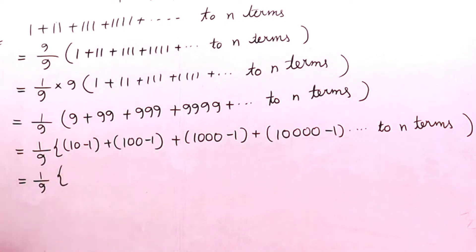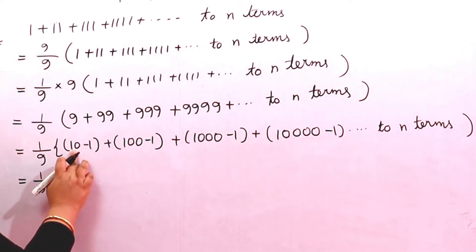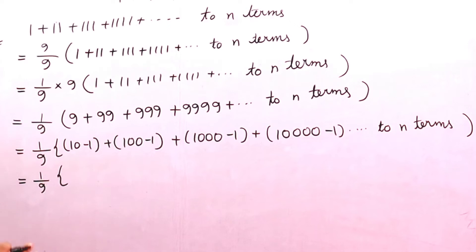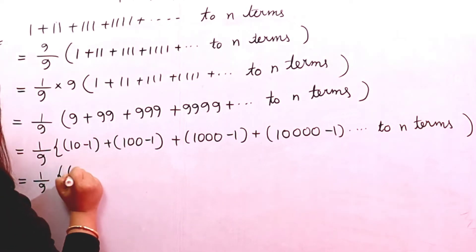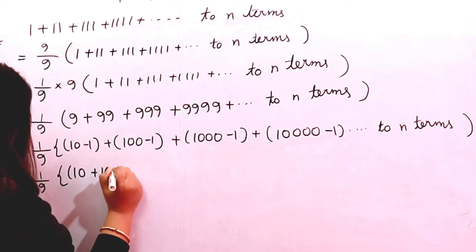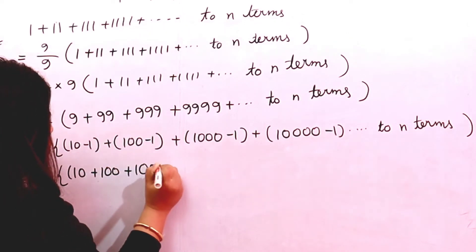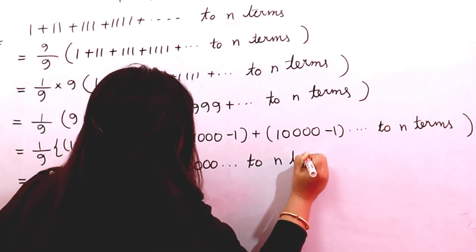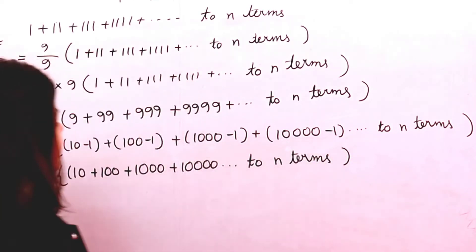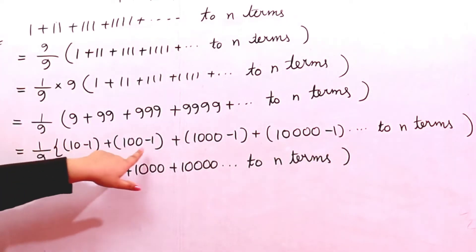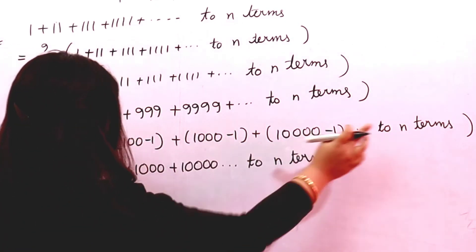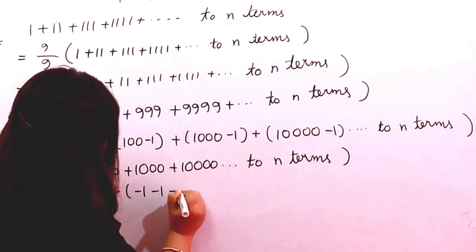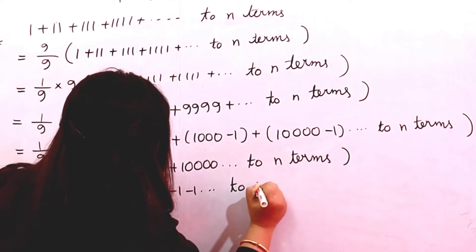We now arrange all the multiples of 10: (10 + 100 + 1000 + 10000...) up to n terms. After that, we separate the −1 terms: (−1 − 1 − 1 − 1...) up to n terms. We close the bracket around both groups.